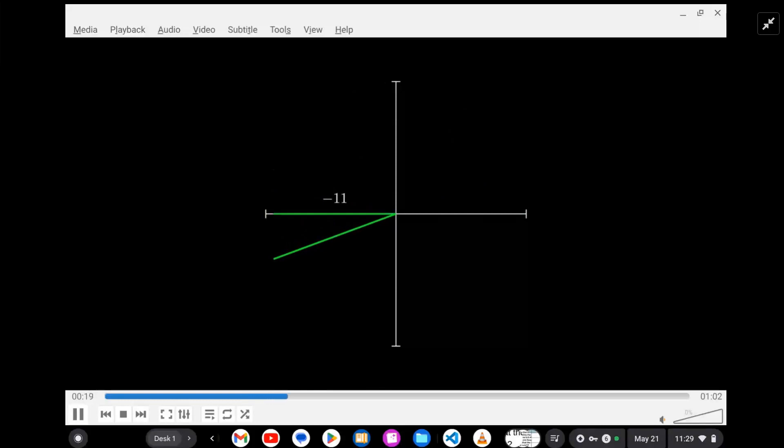And the two legs are negative 4 and negative 11. And then from there, we can find the hypotenuse with Pythagoras.